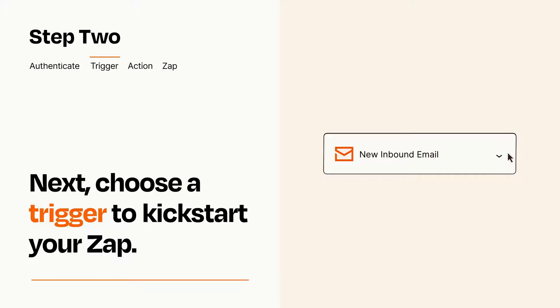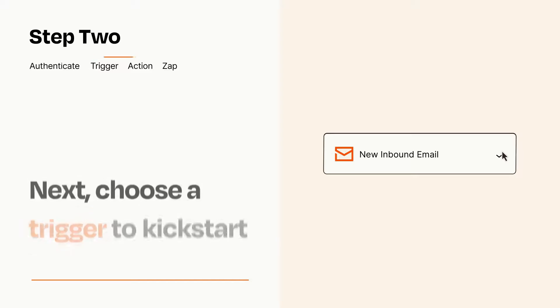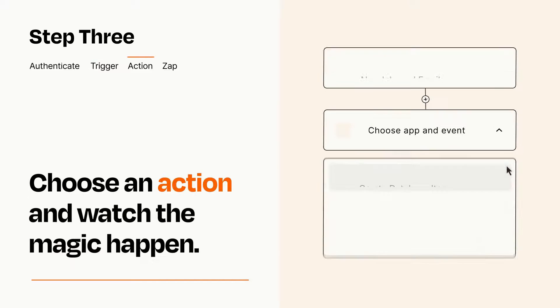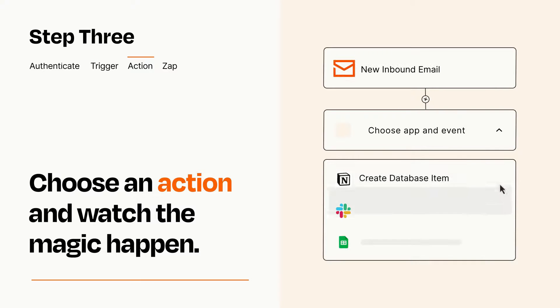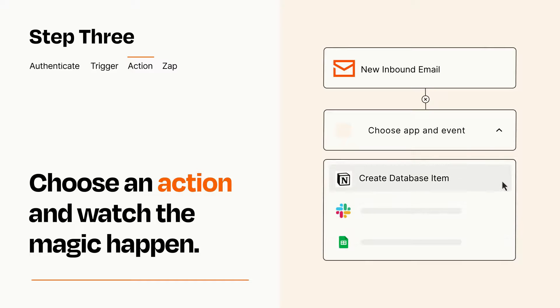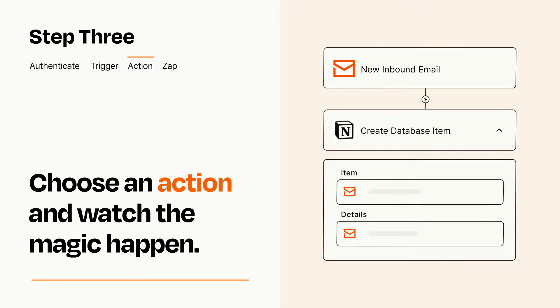This last part is where the magic happens. Choose the action you want to happen in your target app. You'll see a bunch of fields where you can specify the details of your Zap. You can type free form text or pull data in from your trigger step as needed.